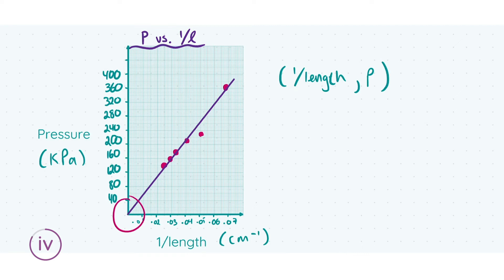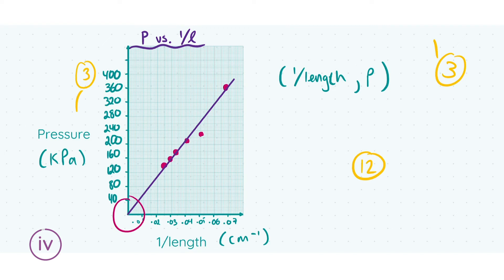For getting this all correct you get a total of 12 marks. The breakdown is: three marks for a correct table including values for 1/L or 1/P along with your measurements; three marks for setting up the graph correctly — labelled axes with units and proportionate scale intervals; three marks for correctly plotting all data points; and a final three marks for drawing your line of best fit.